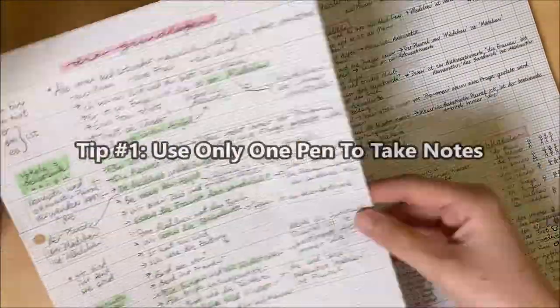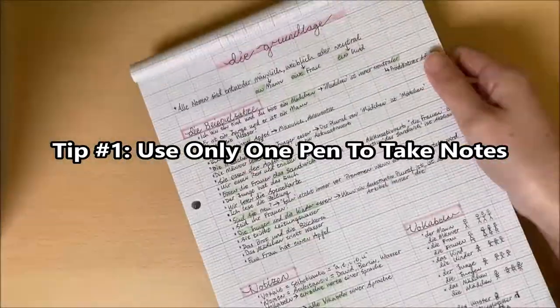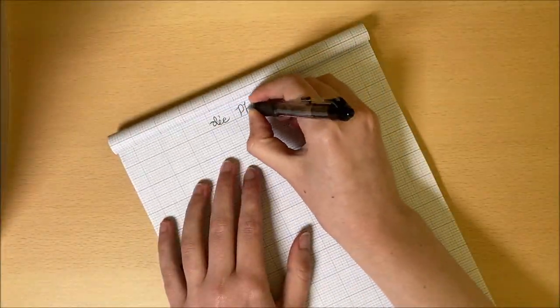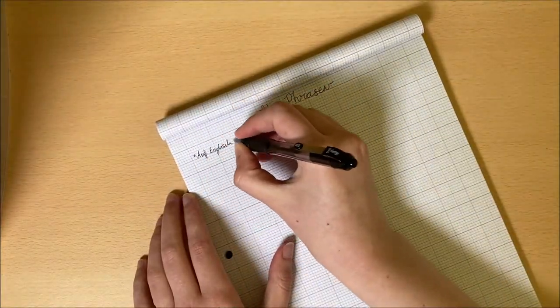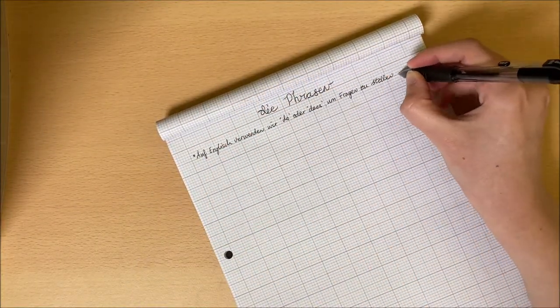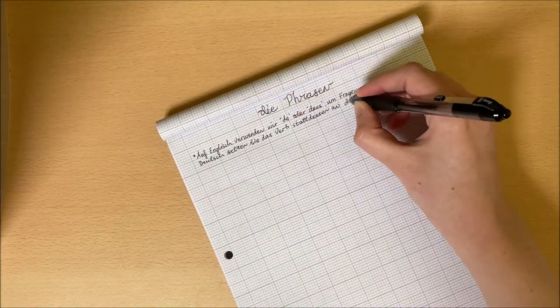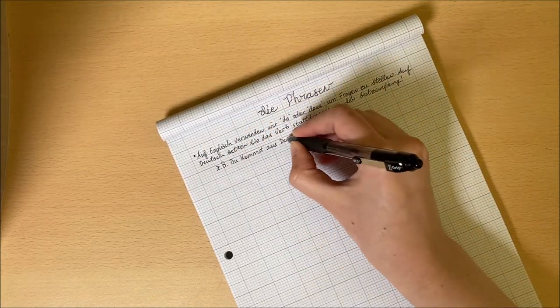My first tip is to only use one colored pen to take notes and then add colors in later. It is a lot easier and more efficient to stick to just one pen while writing notes, and then you can come back in with highlighters or colored pencils at a later date.